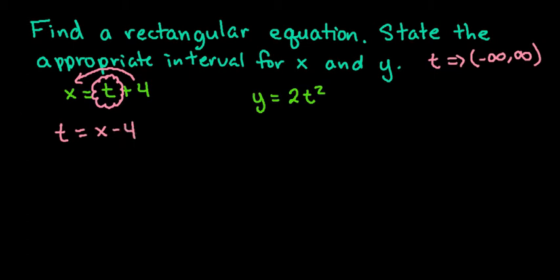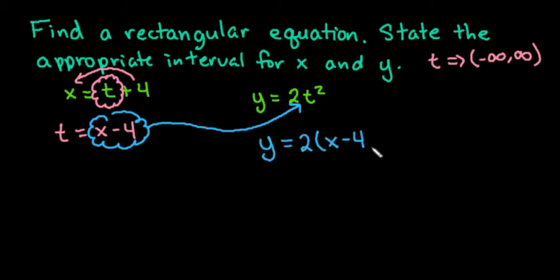And now I'm going to take this equation, x minus 4, and I'm going to plug it in for t into the other equation. So I would end up with y equals 2 times x minus 4 squared. And for the most part, most of the time, you would be able to write this as your final answer.